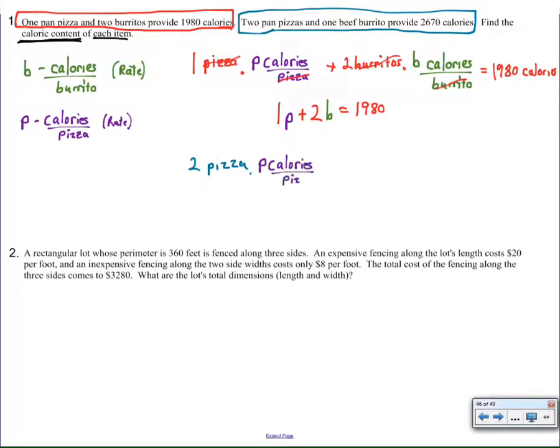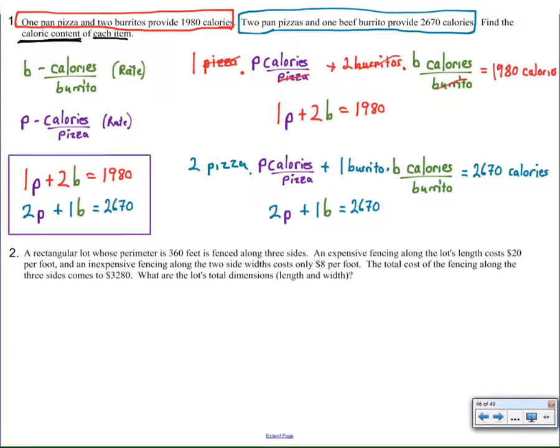2 pizzas times p calories per pizza added to 1 burrito times the amount of calories in a burrito is going to give us 2,670 calories. Once again, we have calories, calories, calories. All the units or labels match up, and that simplifies into this system. Now, take all this paragraph and turn it into this system.